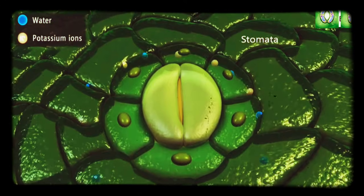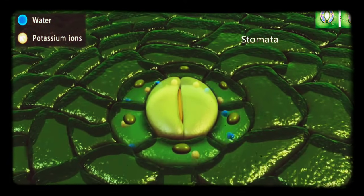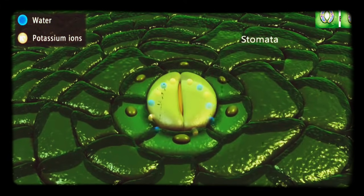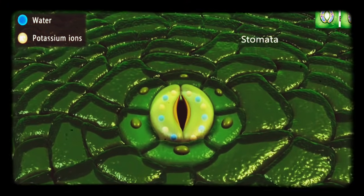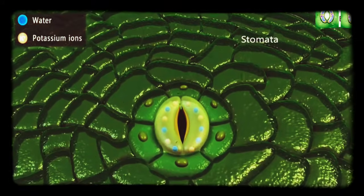During the daytime, water enters into the guard cells along with the potassium ions. This brings about a change in the shape of the guard cells and the stoma opens.